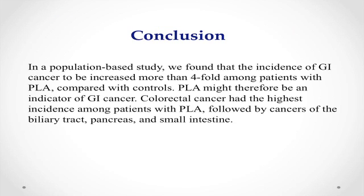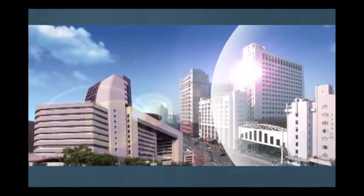In conclusion, in a population-based study, we found that the incidence of GI cancer was increased more than 4.4 times among patients with pyogenic liver abscess compared with control. Pyogenic liver abscess might be an indicator of GI cancer. Colorectal cancer had the highest incidence among patients with pyogenic abscess, followed by cancer of the biliary tract, pancreas, and small intestine. Thank you for your attention.